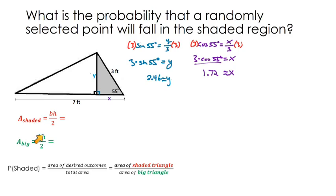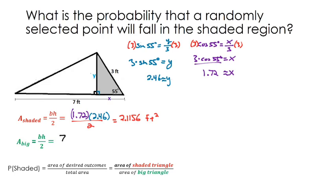Now we have all the values we need. For the shaded triangle: base is 1.72, height is 2.46, divided by 2 — that gives 2.1156 square feet. For the big triangle: base is 7, height is 2.46, divided by 2 — that gives 8.61 square feet.